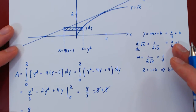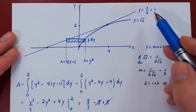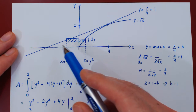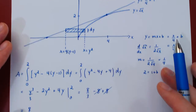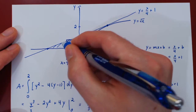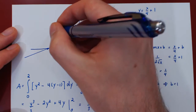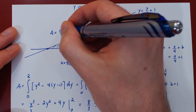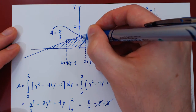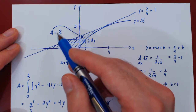This completes our solution. The area of the region bounded by the tangent line to root of x at x equals 4, root of x itself, and the x-axis, is exactly equal to 8 over 3.